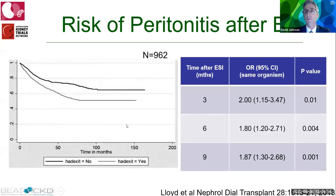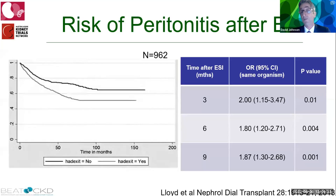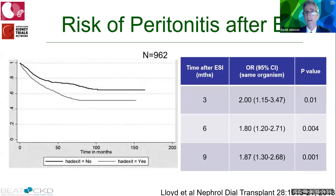Justification for the catheter-related peritonitis definition comes from studies showing that following an exit site infection, the risk of peritonitis extends up to nine months, with the highest risk within three months. The ISPD working group considered three months a reasonable cut-point. Any peritonitis occurring within three months of an exit site or tunnel infection is therefore classified as catheter-related peritonitis.